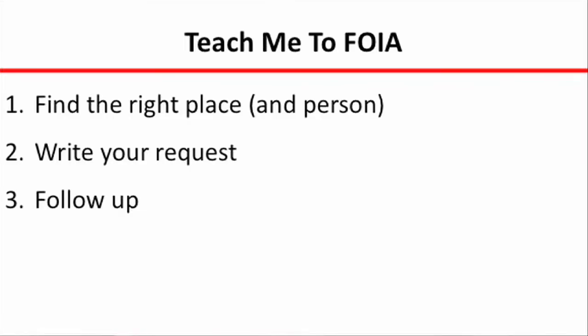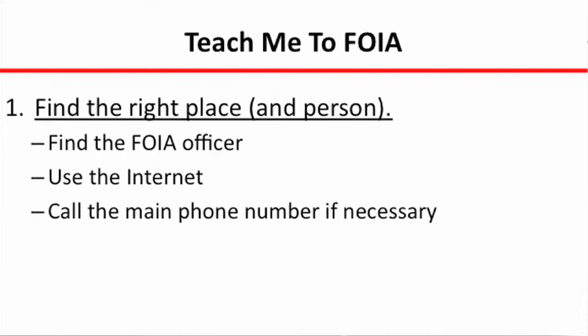First, you want to find the right place and person to send your request to. You want to think about what public body — or maybe multiple public bodies — would have the kinds of documents that you're looking for. Then you want to find out how to go about doing a FOIA request to them, write your request, and follow it. So first: finding the right place and person.